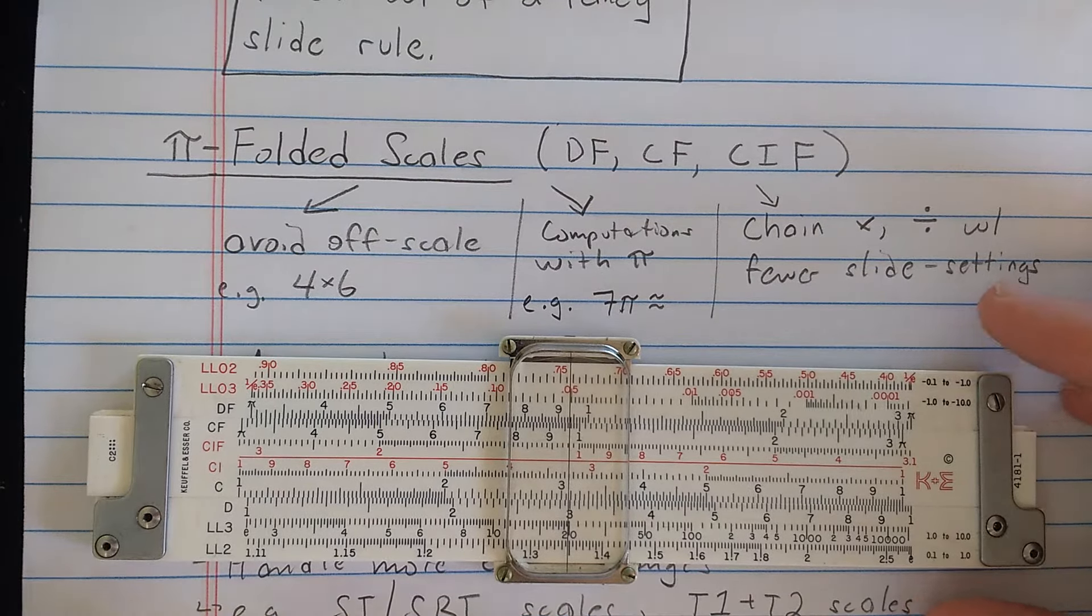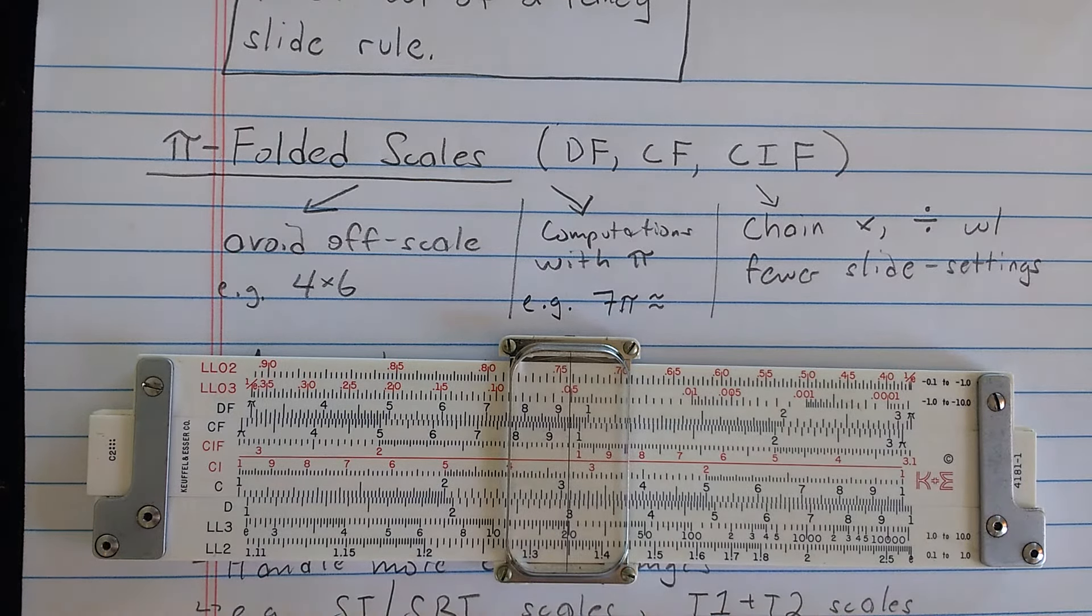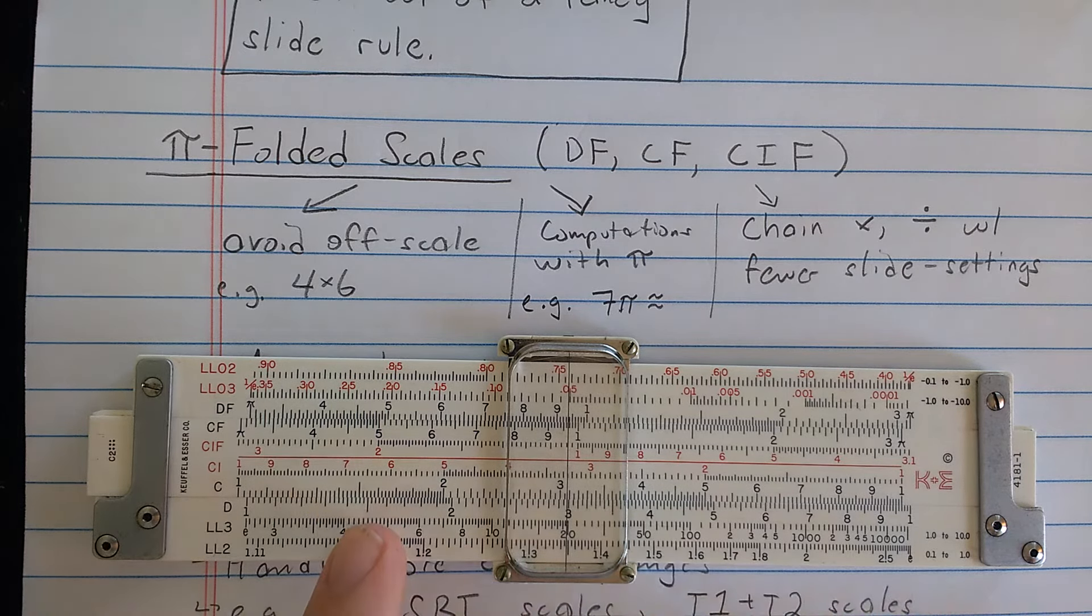So the first advanced feature this slide rule has that wasn't on our basic rule are these folded scales. These are the CIF, the CF and the DF scales.